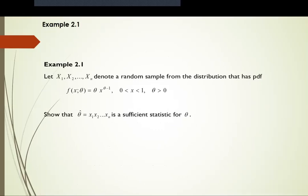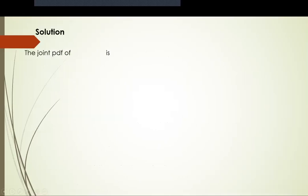Referring to the first example, let x1, x2, ..., xn denote a random sample from a distribution with PDF given as theta * x^(theta - 1), where x belongs to (0, 1) and theta is greater than 0. We want to show that theta-hat, the product of xi, is a sufficient statistic for theta. Our first step is to construct the joint PDF of x1, x2, ..., xn.